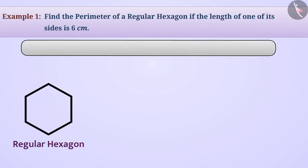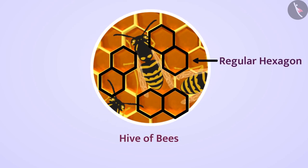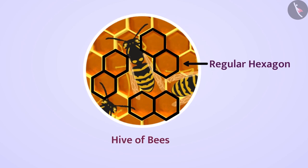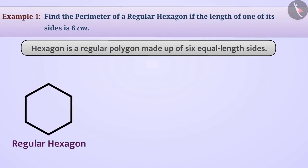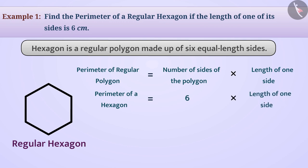We know that a hexagon is a regular polygon made up of six equal length sides. A regular hexagon can be seen in a hive of bees. Since the perimeter of a regular polygon is equal to the number of sides multiplied by the length of one side, the perimeter of a hexagon is equal to 6 multiplied by the length of one side.